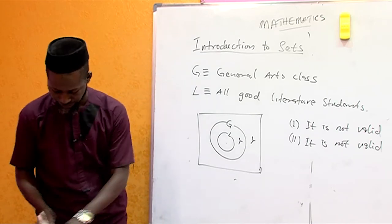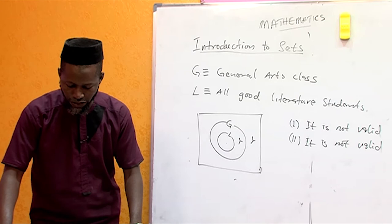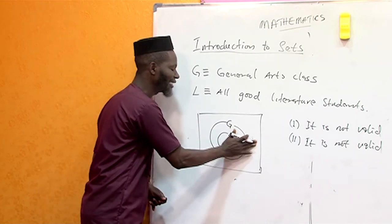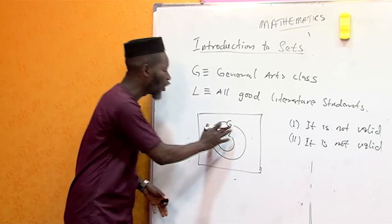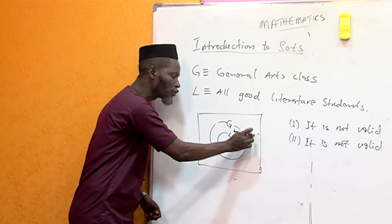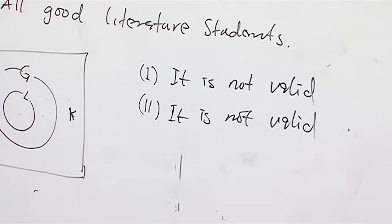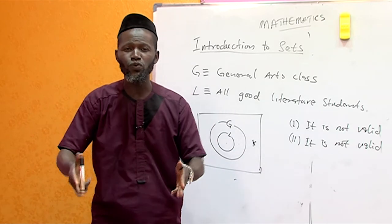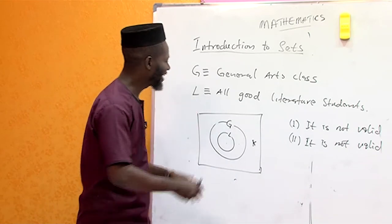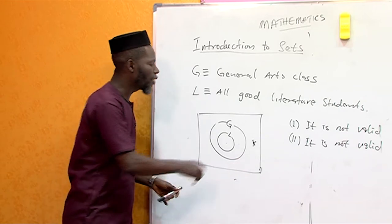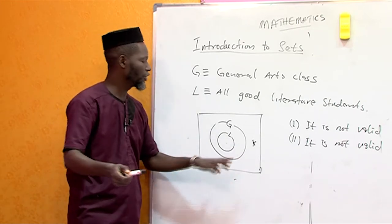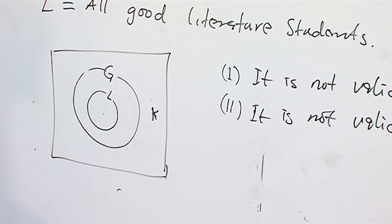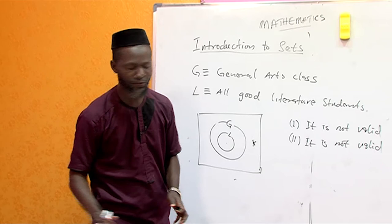The third statement: Keoku is not in the general arts class, therefore he is not a good literature student. Keoku does not belong to G. Since all literature students are inside G, if Keoku is outside G, he definitely cannot be a good literature student. There is no disagreement here. Therefore the third statement is valid.